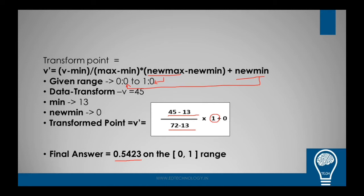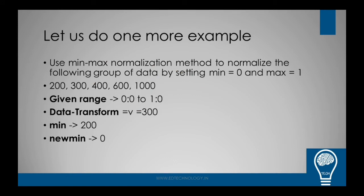So the new transform point of 45 on the scale of 0 to 1 using the given set of values is 0.5423. Understood, guys? So similarly, let us do one more example so you guys can understand it well. Now we have another set of values. We still have the same min-max of the new values.